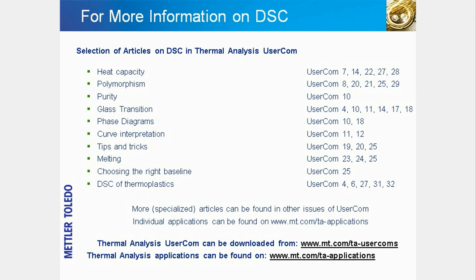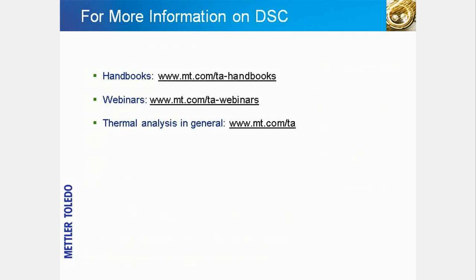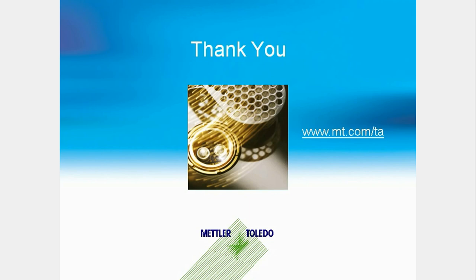Finally, further information about differential scanning calorimetry can be downloaded from the internet. Mettler Toledo publishes articles on thermal analysis and applications from different fields twice a year in UserCom, the well-known Mettler Toledo bi-annual technical customer magazine. Back issues can be downloaded as PDF files from the internet. Individual applications can also be searched for on the Mettler Toledo homepage, along with information about application handbooks, webinars, and other resources. This concludes the presentation on differential scanning calorimetry. Thank you for your interest and attention.